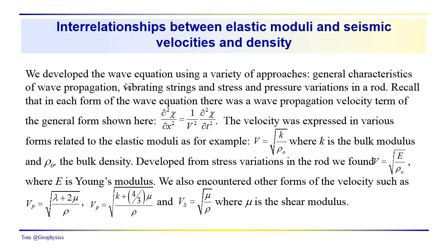Previously we developed a wave equation using a variety of different approaches. We talked about the general characteristics of wave propagation and how that led, in quantitative form, to the development of the wave equation. We also developed the equation by looking at tension variations within a vibrating string and stress and pressure variations in a rod. Each time we came up with an equation in this general form, where the second spatial derivative of particle displacement from its equilibrium position is proportional to the second temporal derivative. The constant of proportionality is the reciprocal of the wave propagation velocity squared.